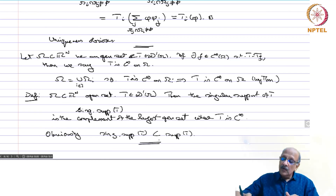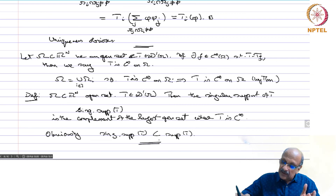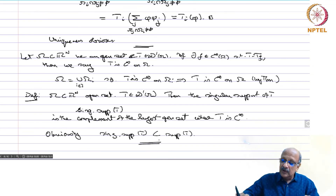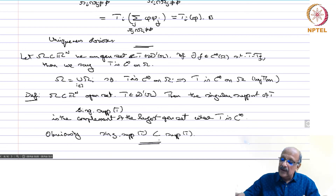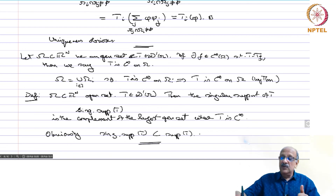For the Dirac distribution and its derivatives, the support itself is the origin. So the singular support is also the origin, because outside everything is 0.